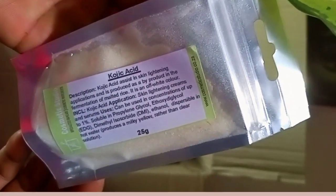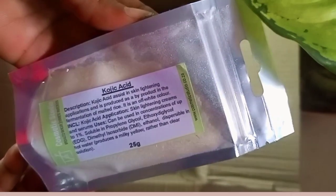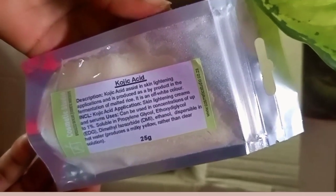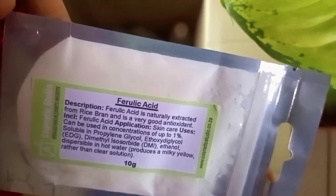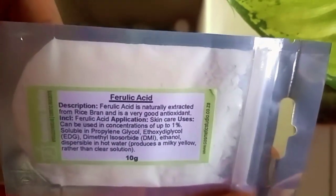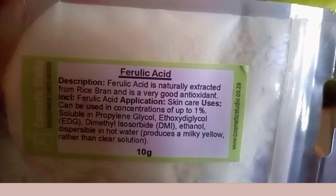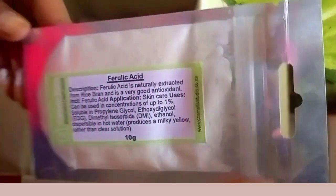Kojic acid is a powerful antioxidant and brightening ingredient derived from fermentation of mushrooms. It helps brighten and address skin discoloration such as dark spots and melasma. Ferulic acid has antioxidant properties that may fight the effects of free radicals, even the skin tone, reduce signs of aging, and it can also stabilize vitamin C if you're using an unstabilized form — ferulic acid will help to stabilize vitamin C.